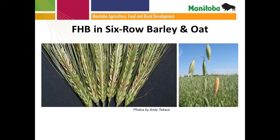A number of small grains can be impacted by fusarium head blight. Here are photos showing symptoms in six-row barley and oats. In barley, infected spikelets can show that bleached appearance, or there can also be a browning or water-soaked appearance. In oats, it's actually very rare to see infected spikelets or infected kernels in the field, though it has been documented — this picture taken by Dr. Andy Tekauz of Agriculture and Agri-Food Canada.